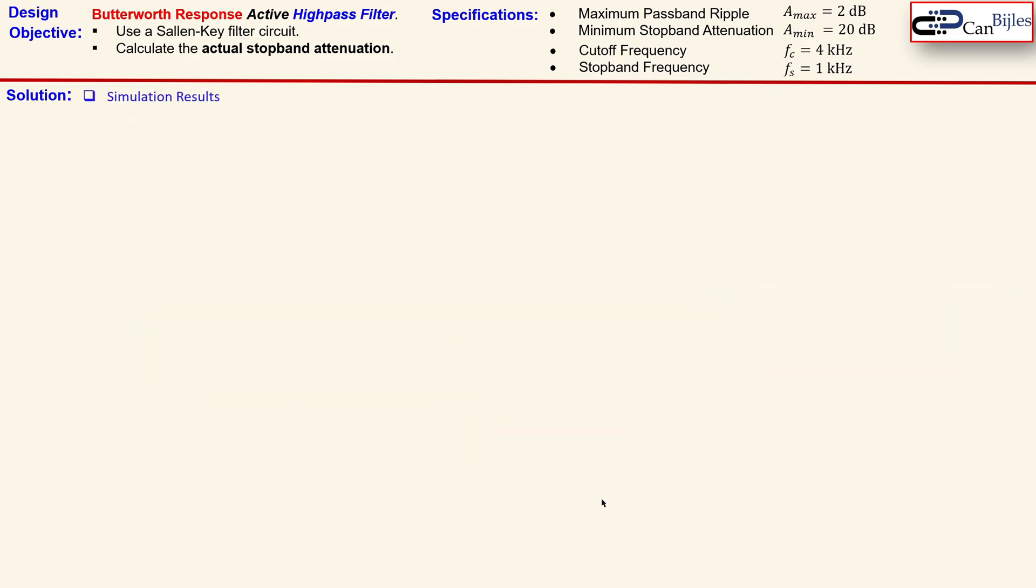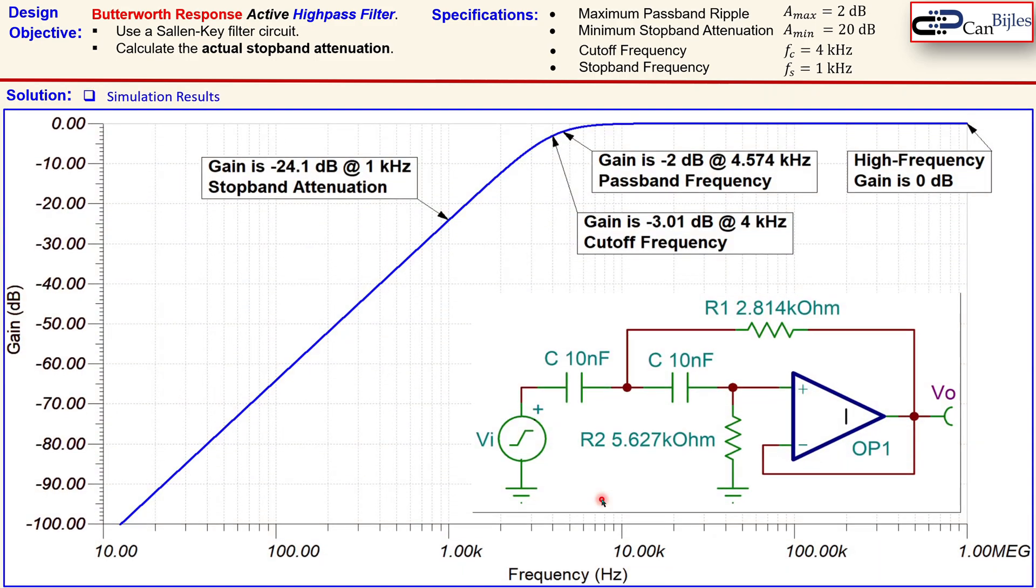Okay, let's now look at the simulation results and verify our calculations. Now this is the circuit in the SPICE simulator. This is the Bode plot. You see the frequencies and the gain and the blue line is our gain plot. Okay, now these are the calculations and the selected values we have here: C1, C2, R1 and R2 and also the passband frequency and also our actual stopband attenuation. You also see the values here, R1 and R2 and the capacitors, etc.